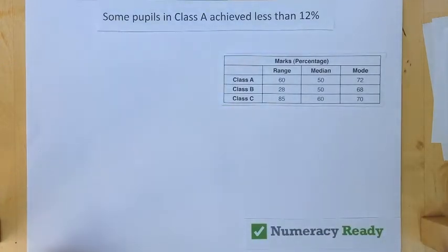You are presented with a table of percentages for three classes and given the range, median and mode for each. The mode is probably the most useful as a starting point because for a number to be a mode, it implies that actual number was scored by students in the class.